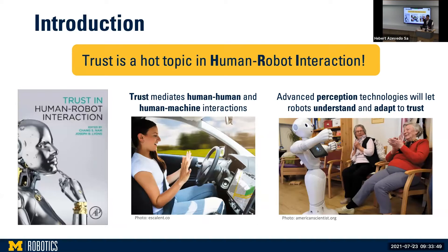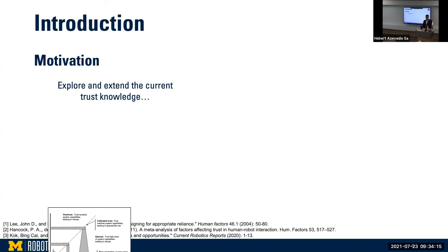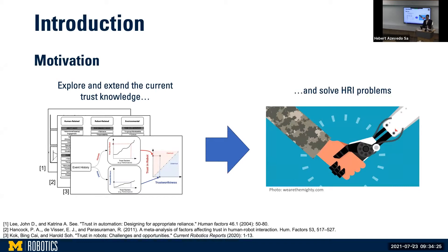As traditional automated systems evolve into robots, their perception technologies are evolving as well. In the future, robots will be able to understand and adapt to humans' trust. Our high-level goal in this dissertation is to extend and explore the state-of-the-art knowledge on trust, and use this knowledge to solve problems that will emerge when people interact with robots, especially in the autonomous driving domain, where people will be drivers and robots will be the automated vehicles. Therefore, we want to propose new methods to process trust.